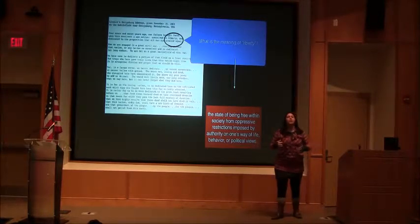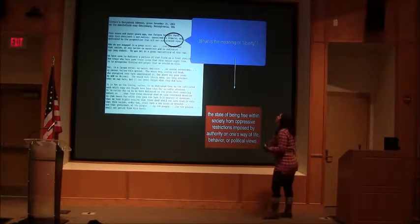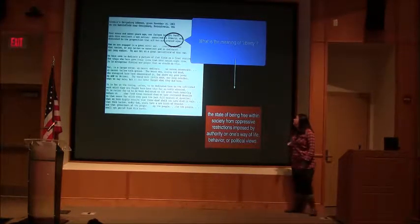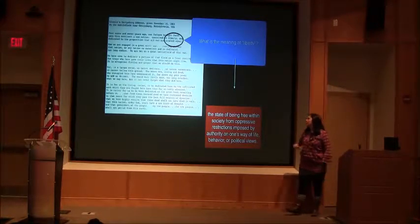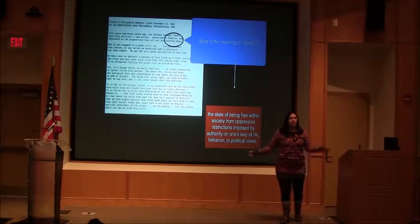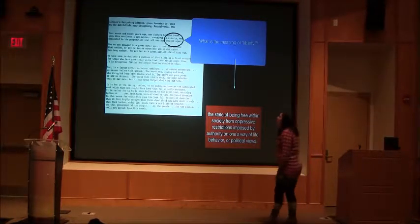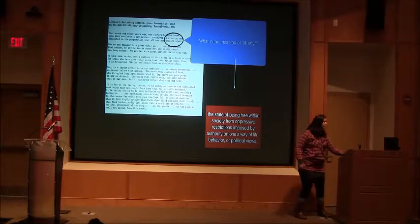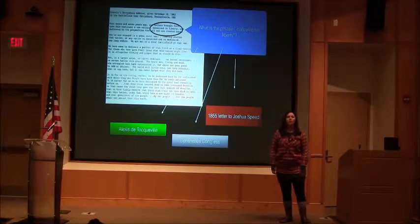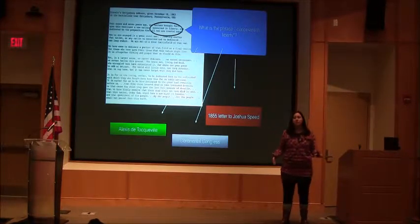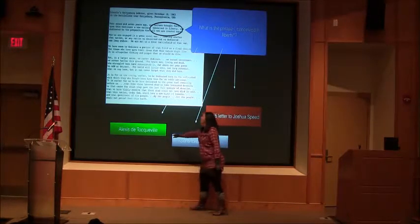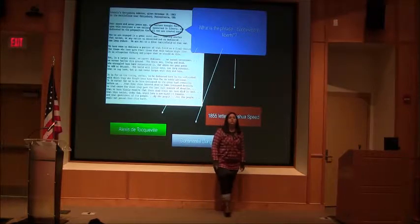As a digital historian, I want to have an argument with another digital historian about the word 'liberty,' which I've circled up there. The dictionary tells me liberty is 'the state of being free within society from oppressive restrictions imposed by authority on one's way of life, behavior, or political views.' But I don't know if Abraham Lincoln actually consulted a dictionary. By looking through the index of books that Abraham Lincoln owned and had in his office, I might decide to define liberty through his use of Alexis de Tocqueville.